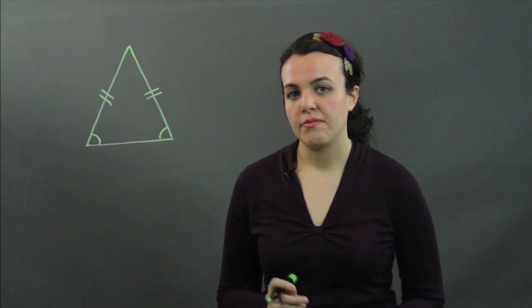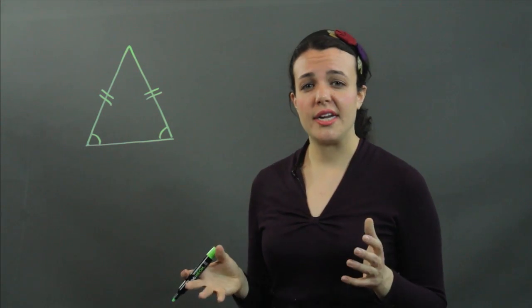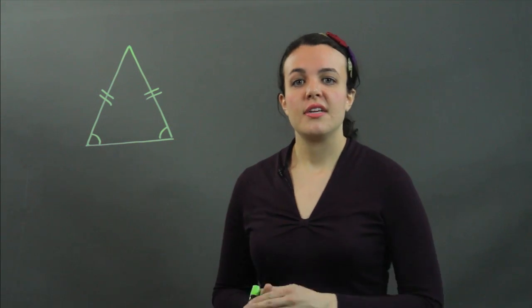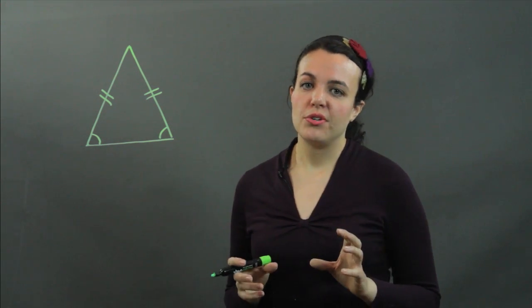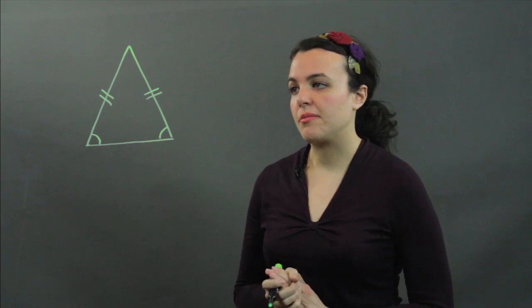A bisector can be a ray, line, line segment, even a plane. Whatever it is, it divides a geometric figure into two congruent parts. In this case, we're going to use a line segment.